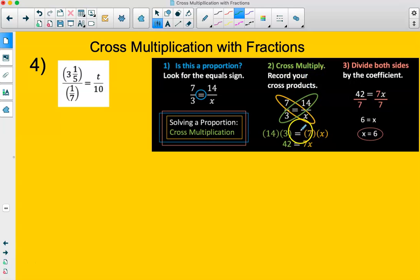Step two, we can jump right into cross multiplication. I'm going to draw my parentheses with the equal sign in between, and then I'm going to multiply 1/7 by t.